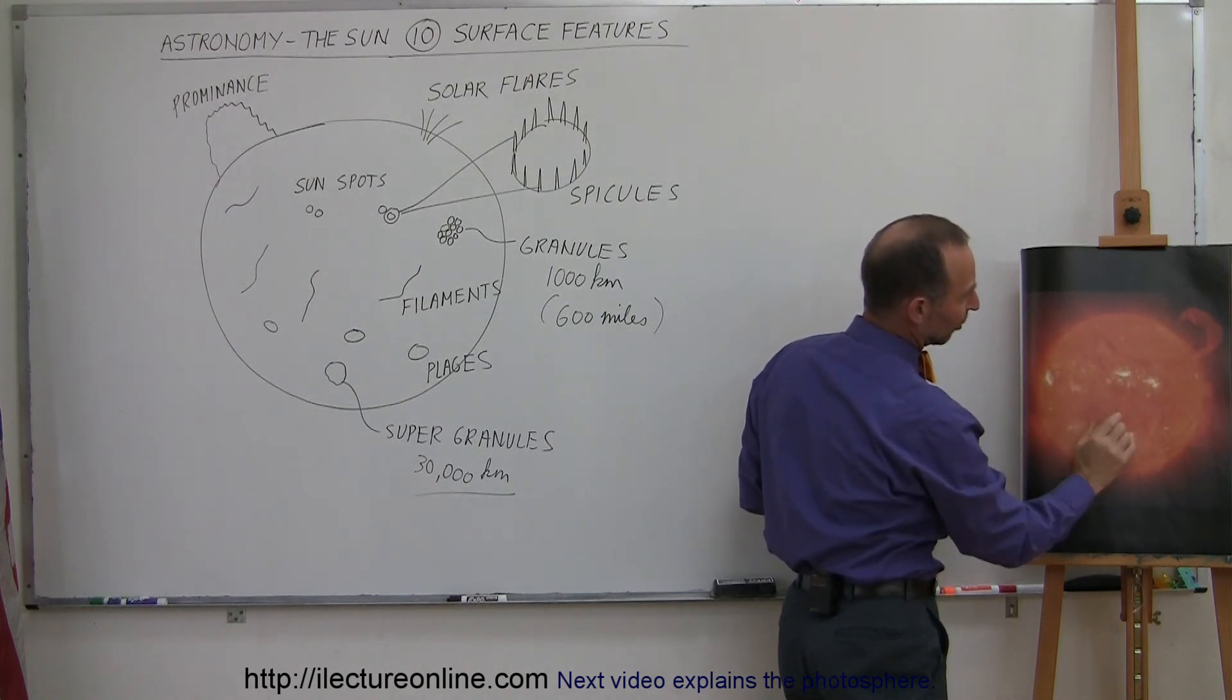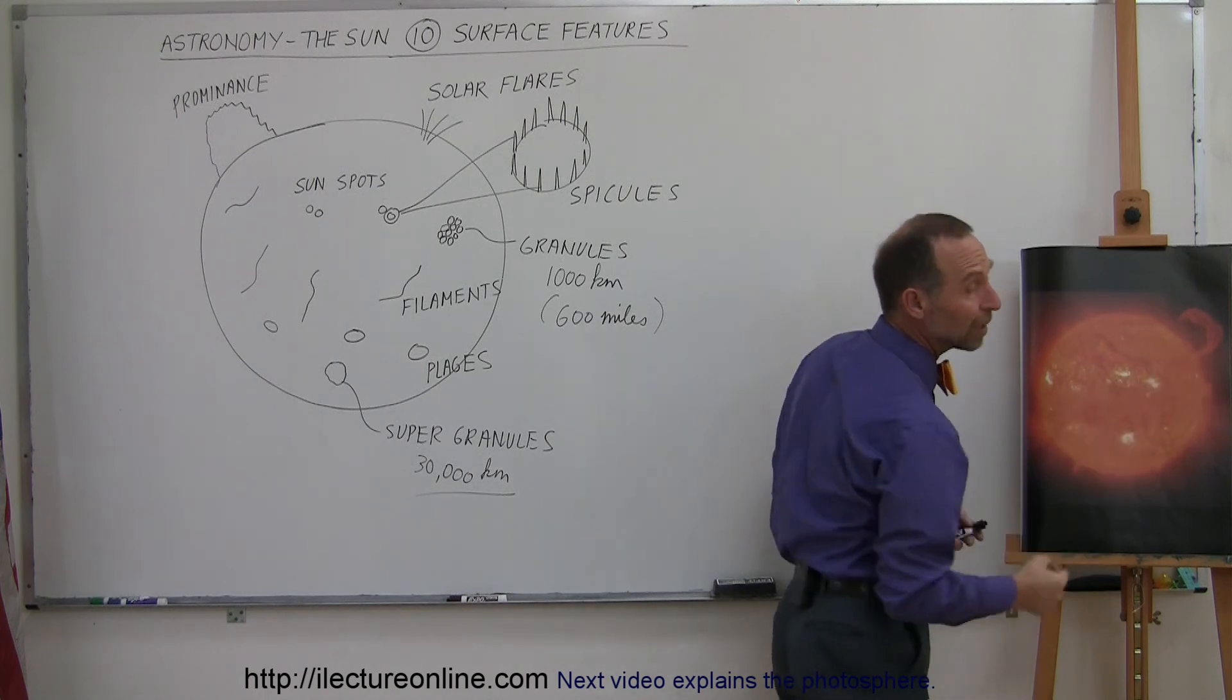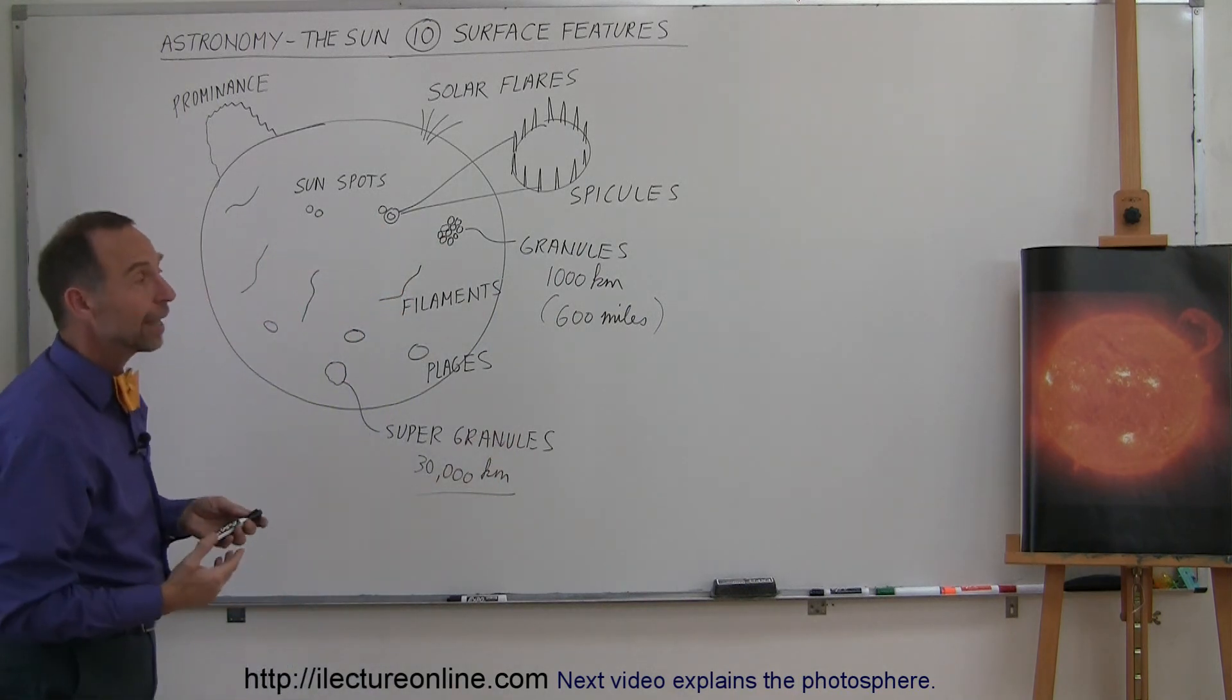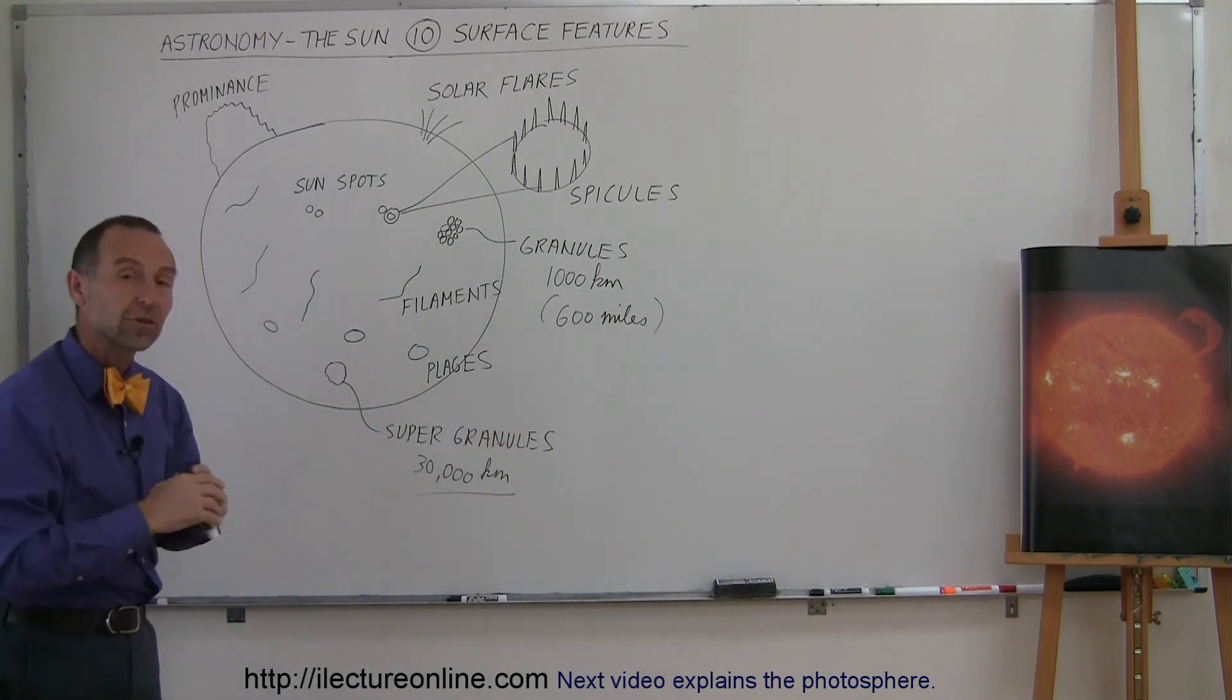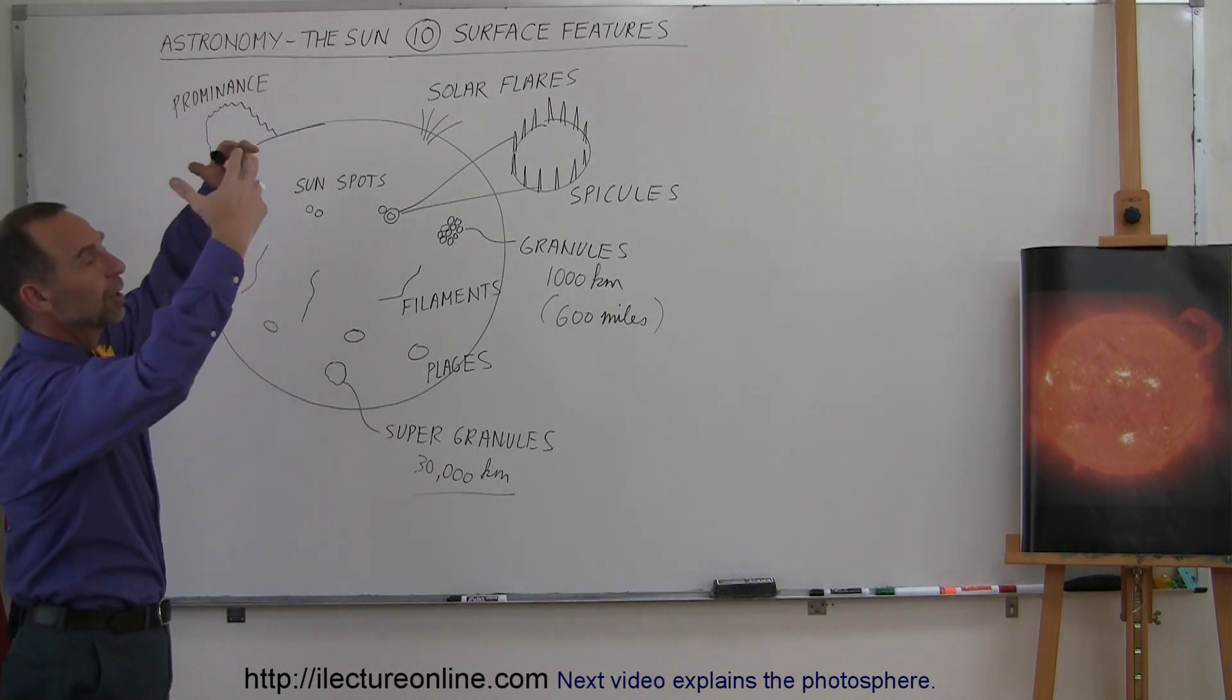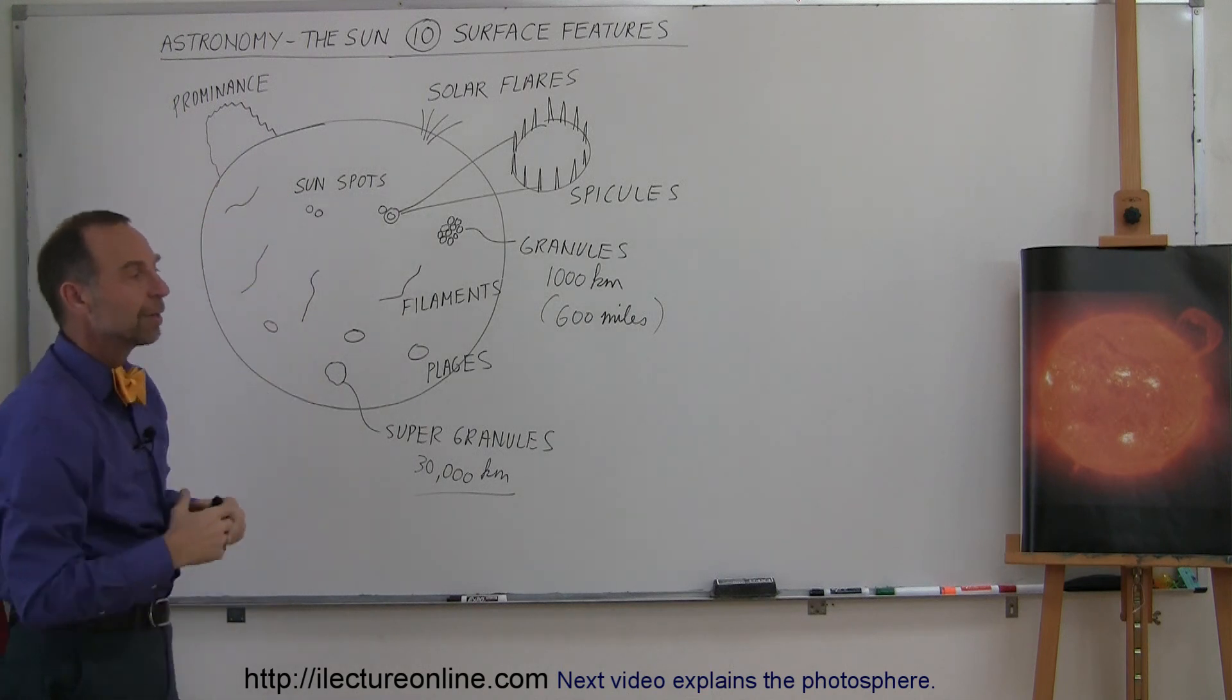and those last for typically hours to about a half a day to a day and then the material falls back to the surface of the Sun. It's simply magnetic field lines just going berserk, pulling a lot of material up and then the gravitational force of the Sun pulls everything back down.